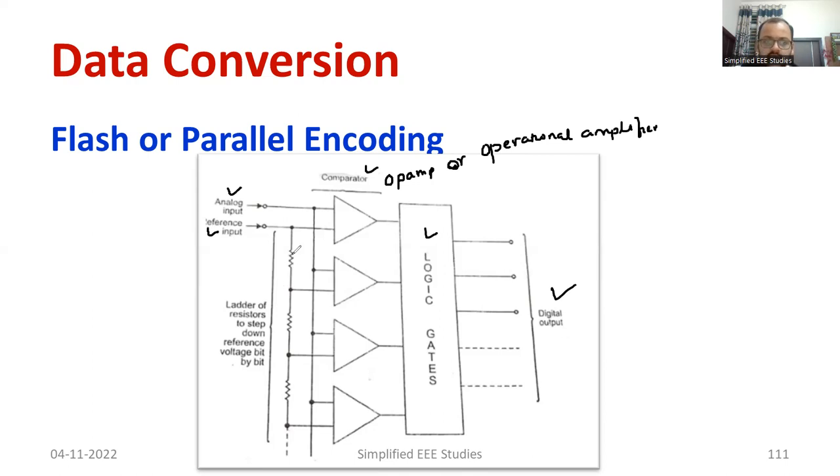The ladder is made up of resistors - R1, R2, R3. It is a continuous ladder depending on the requirement. You can connect the resistor in serial fashion. It will act as a divider. So the ladder of resistors steps down the reference voltage bit by bit. That is the importance of this ladder. It is a series voltage divider.